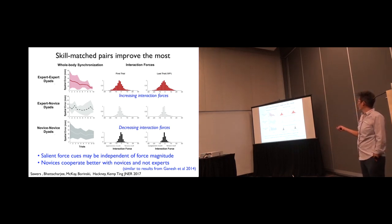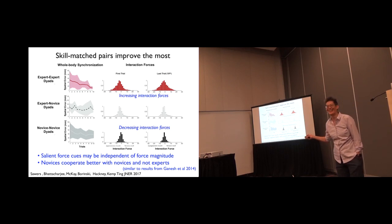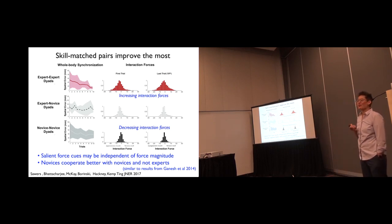So the experts reduced their spatial error over trials. The novices reduced their error to a lesser degree over trials. And when the experts were paired with the novices, learning did not happen.